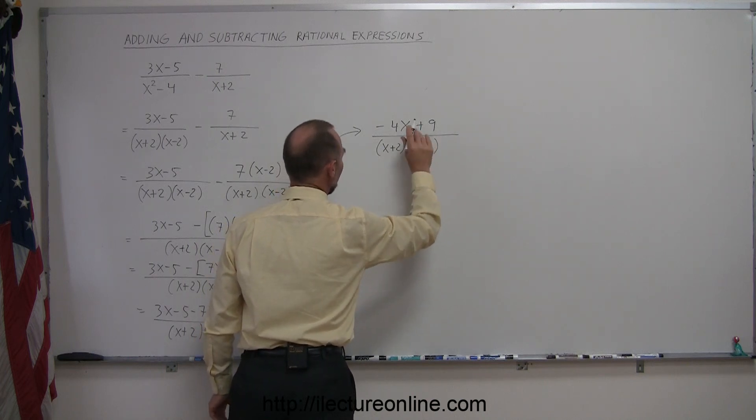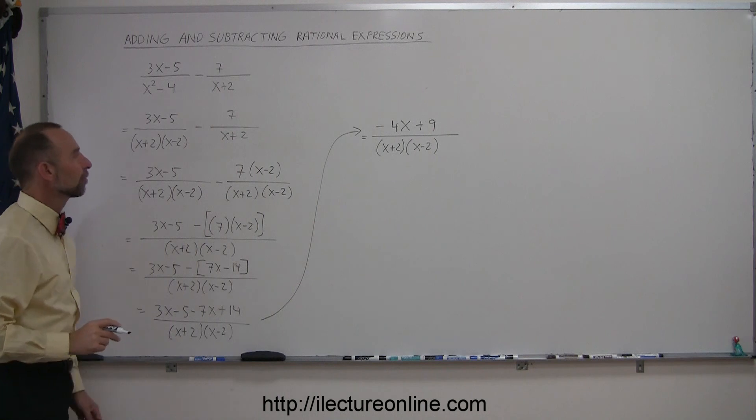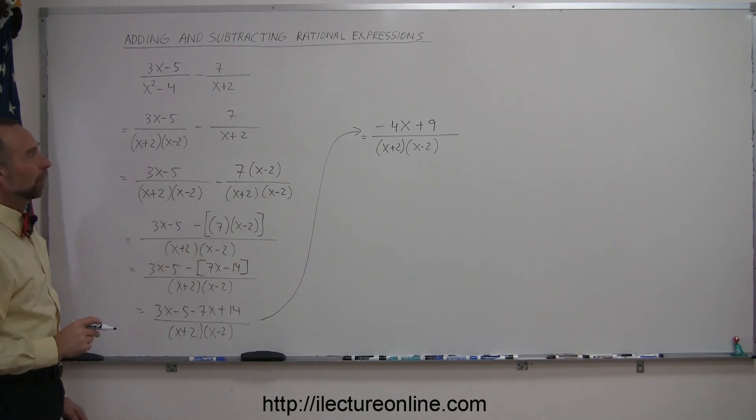times x minus 2. That's the most simplified form of the subtraction we started with. We cannot factor anything out, so we cannot make it any simpler than that, and that's the answer.